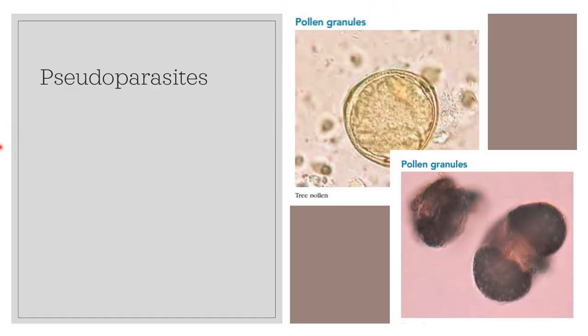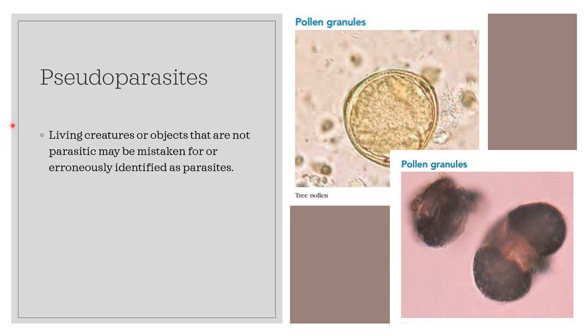Another important terminology is pseudoparasites. Living creatures or objects that are not parasitic may be mistaken for or erroneously identified as parasites — these are referred to as pseudoparasites. Sometimes fecal flotation procedures will reveal pollen grains from trees such as pine pollen or from flowering plants. A novice veterinary student or veterinary technician may view these pollen grains on fecal flotation and erroneously identify them as parasites.